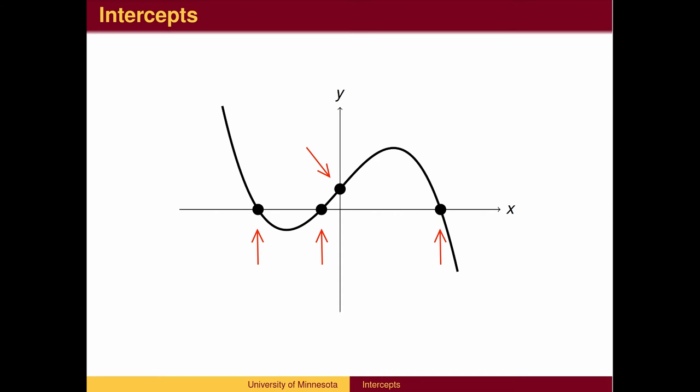Intercepts. We are often interested in places where a graph intersects one of the coordinate axes, since these are the points where one of the coordinates is zero.